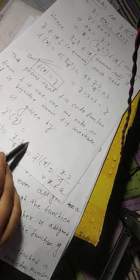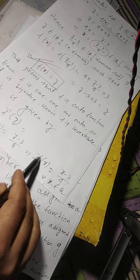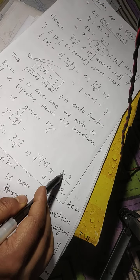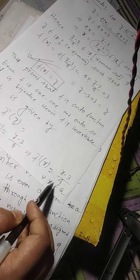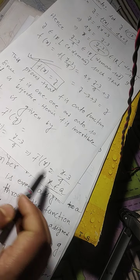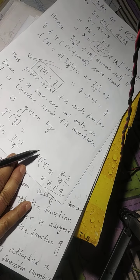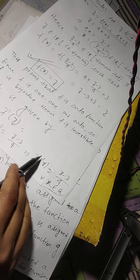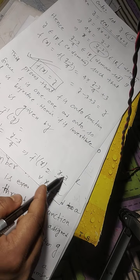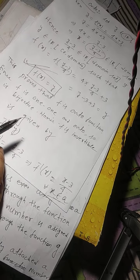Now replacing y by x, f inverse of x equals (x minus 3) divided by 4, where x belongs to real numbers. So the value of f inverse equals (x minus 3) by 4.